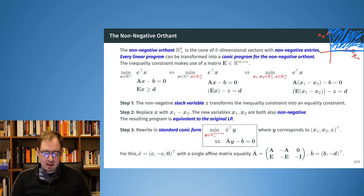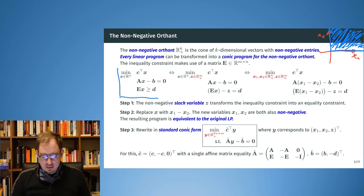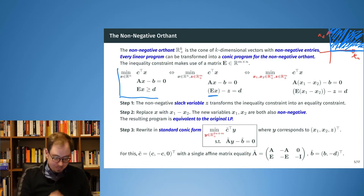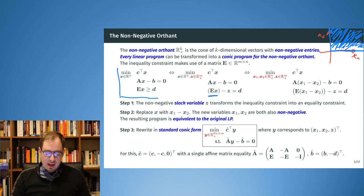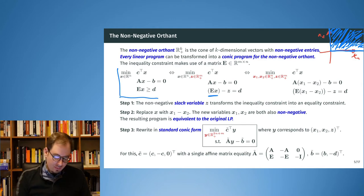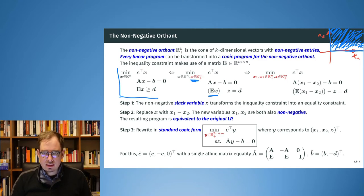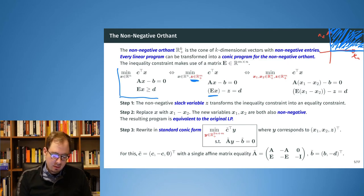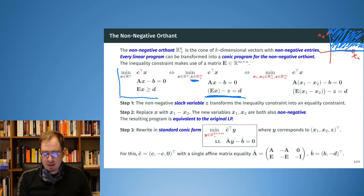We can take any linear program and transform it into a conic program on the non-negative orthant. First, we move x out and add a slack variable. In the first step, we add a slack variable z that is required to be all positive. Then we can replace the inequality constraint with an equality constraint, and because z has to be positive, these two problems are equivalent.